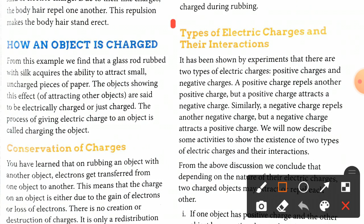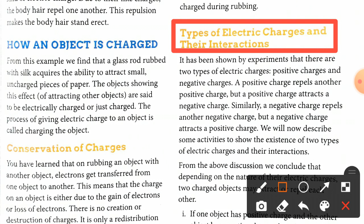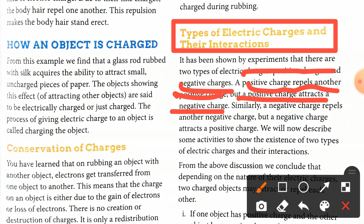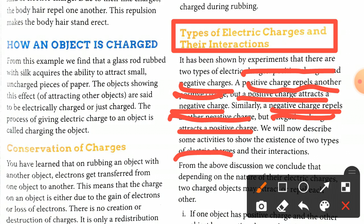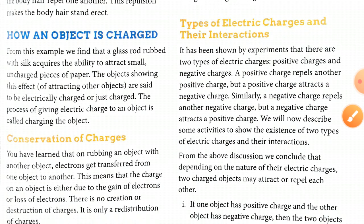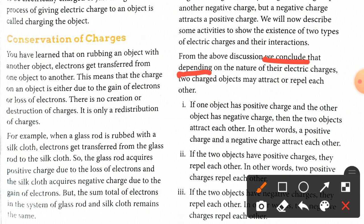It has been shown by experiment that there are two types of electric charges — positive and negative. A positive charge repels another positive charge but attracts a negative charge. Similarly, a negative charge repels another negative charge but attracts a positive charge. We will now describe some activities to show the existence of two types of electric charges and their interactions.